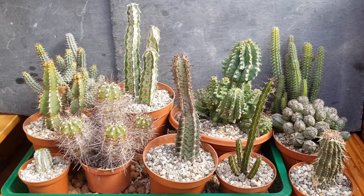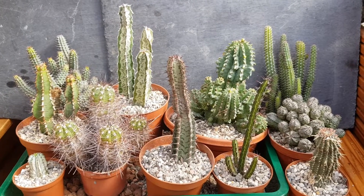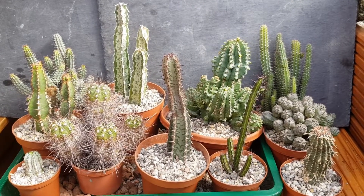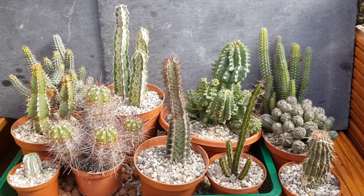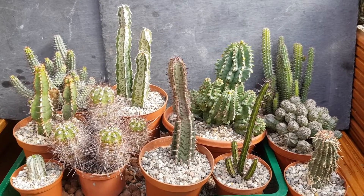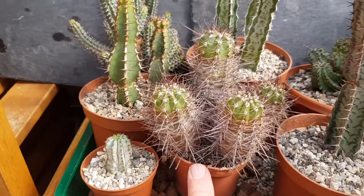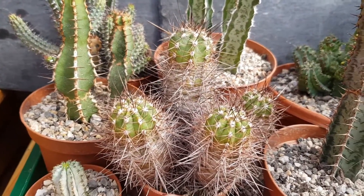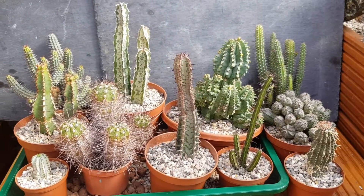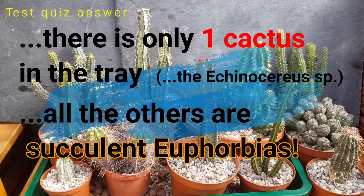I've got this really nice tray of wonderful prickly succulent plants here, and a question for you: can you actually pick out the cacti from this assembly? It's actually a bit of a trick question, because there is only one member of the family Cactaceae — one cactus — and well done if you've spotted the Echinocereus here, the Echinocereus from Mexico. All the other plants, although they look a bit like cacti — succulent and quite prickly — are actually completely unrelated.